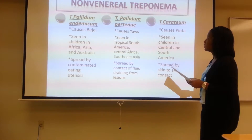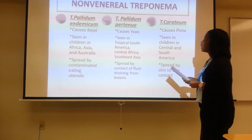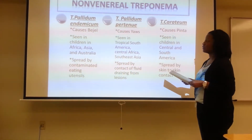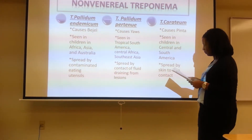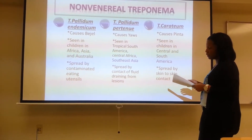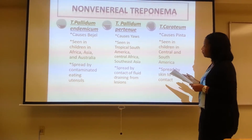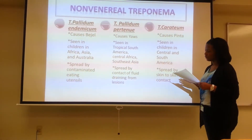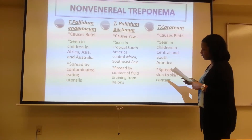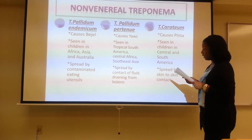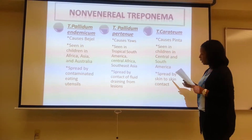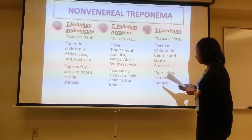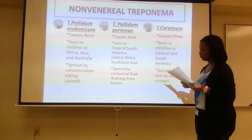The next type is T. pallidum pertenue, which causes a disease called yaws. Yaws is seen in tropical South America, Central Africa, and Southeast Asia, and is spread by contact with fluid draining from lesions. Yaws causes granular skin lesions that are unsightly but actually painless. Over time, the lesions develop into large, destructive, draining lesions on the skin — which is how it spreads through contact with fluid from those lesions.